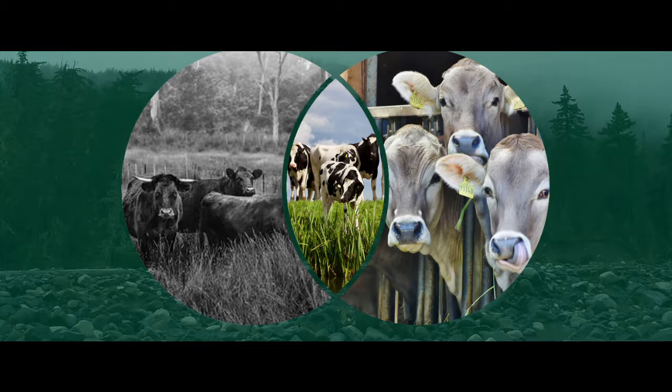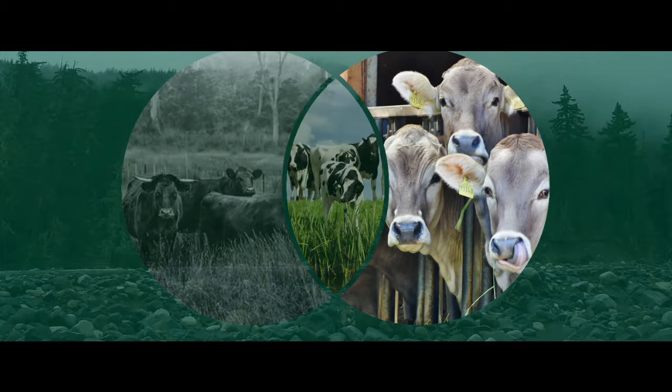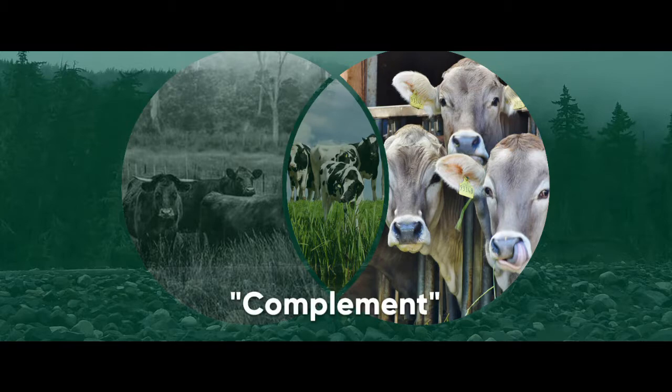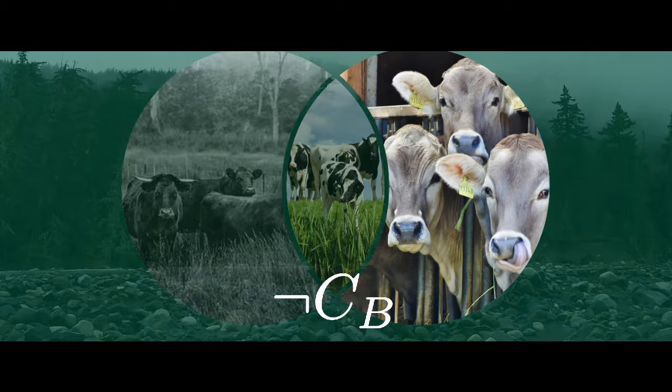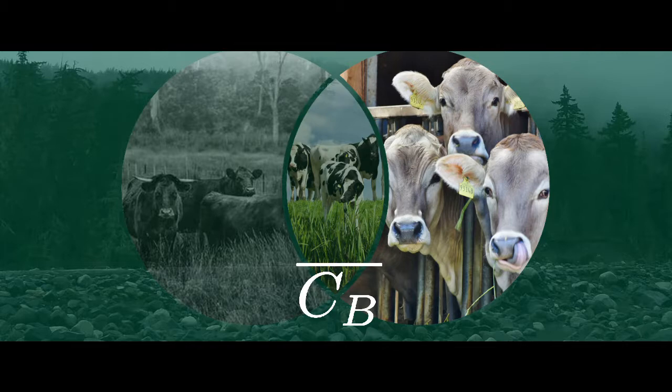And finally, what if we wanted to talk about all the cows which didn't have a certain property? For example, all the cows which are not black. We call this set the complement of a given set, and write: ¬C sub B or C to the C sub B or overline C sub B.